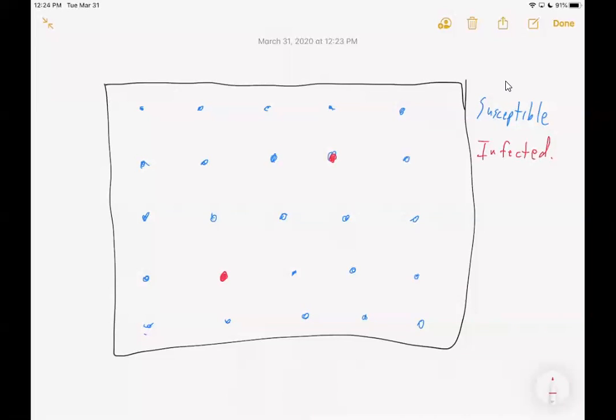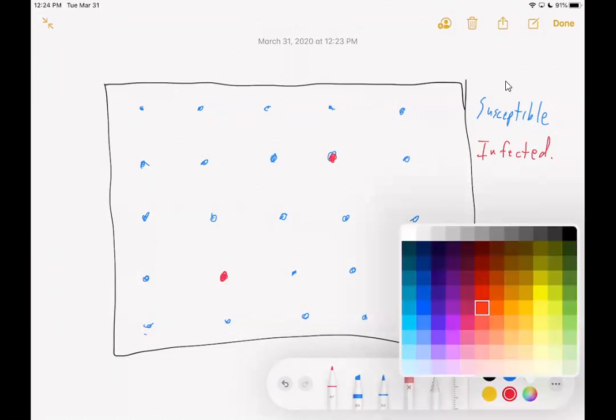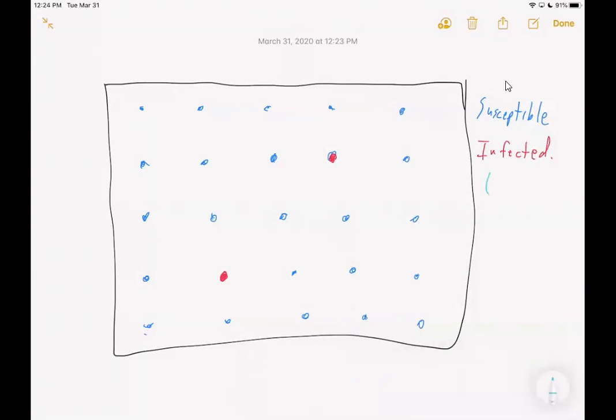Now we're going to be adding, let me just do this. Not yellow would be a terrible color. We'll do a light shade of blue. We're going to do E, which will be exposed. That will be coming up. But we're not going to put it into this model. Exposed people are still like susceptible people. They're not going to infect anyone. And they can't get reinfected because they've already been exposed.